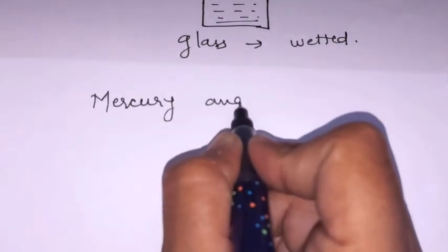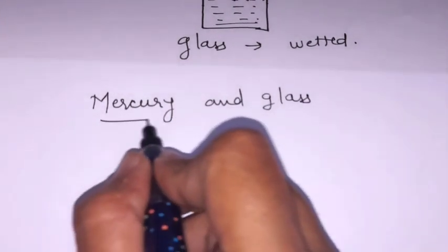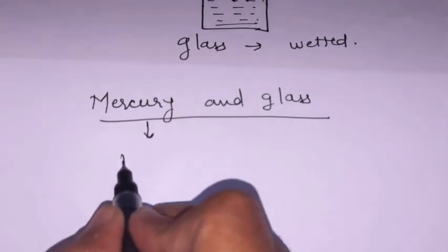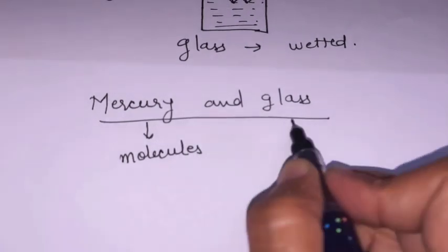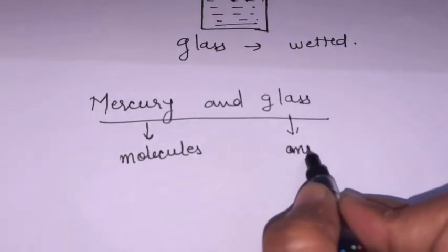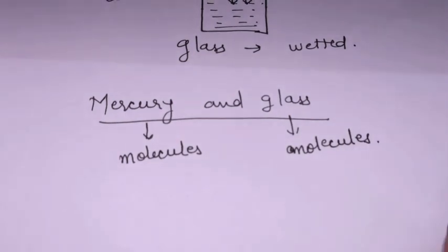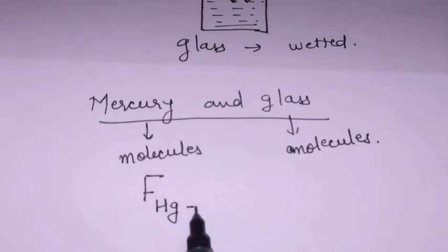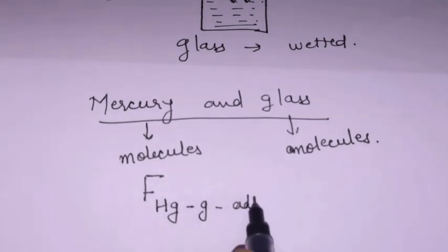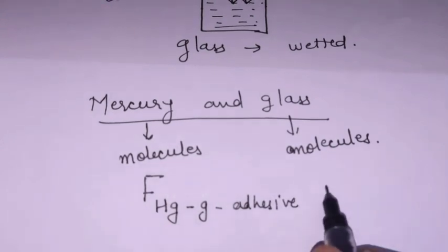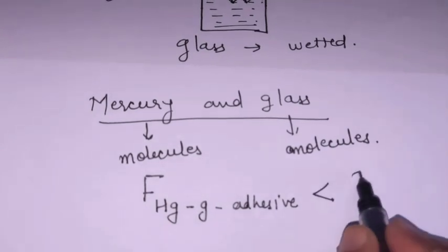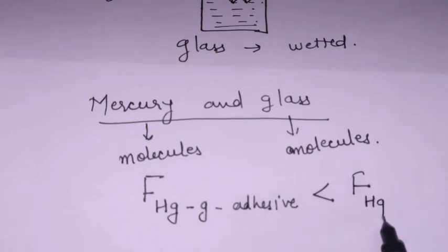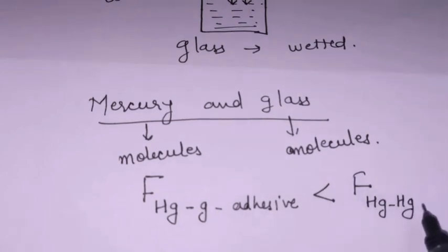But if we are studying the pairing between mercury and glass surface, we will be taking mercury molecules and glass molecules. The adhesive force between mercury molecules and glass molecules is less than the cohesive force between mercury and mercury molecules.